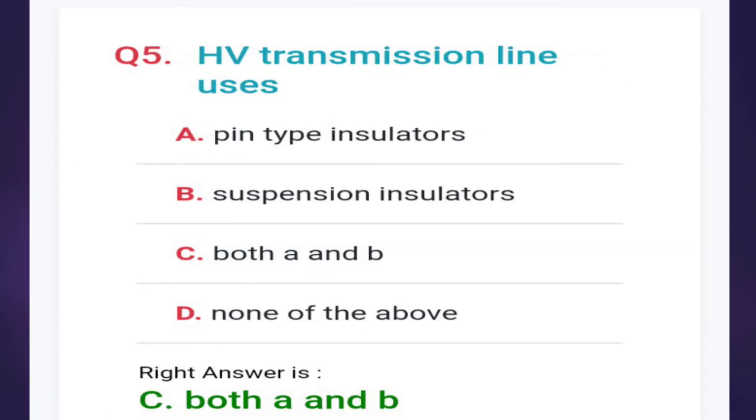Fifth: the HV transmission line uses pin type insulator, suspension insulator, both A and B, or none of the above. The answer is both A and B, means pin type insulator and suspension type insulator.